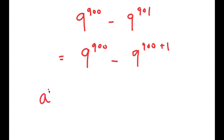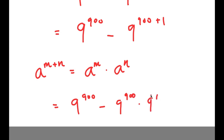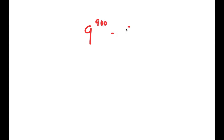Now I can use the exponential property: a to the power of m plus n is equal to a to the power of m times a to the power of n. So I get 9 to the power of 900 minus 9 to the power of 900 times 9 to the power of 1.